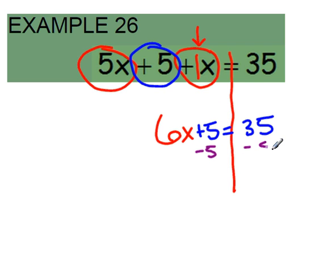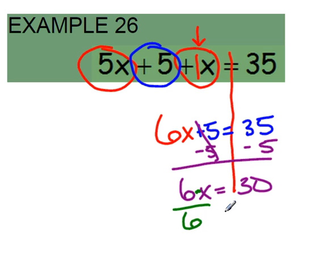That will give me 6x equals 30. So then I can inverse the coefficient, and they are multiplying so we want to divide because that's the opposite. So we'll divide by 6 and we get x equals 5.